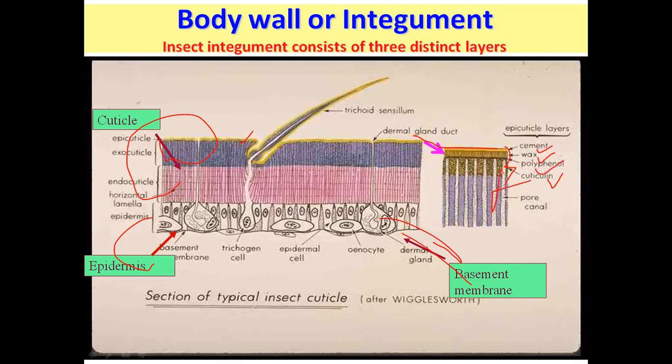Remember: in the epicuticle, cement is the outermost layer and cuticlin is the innermost layer. The cement layer is secreted by the dermal gland. Its role is to protect the body from external damage.